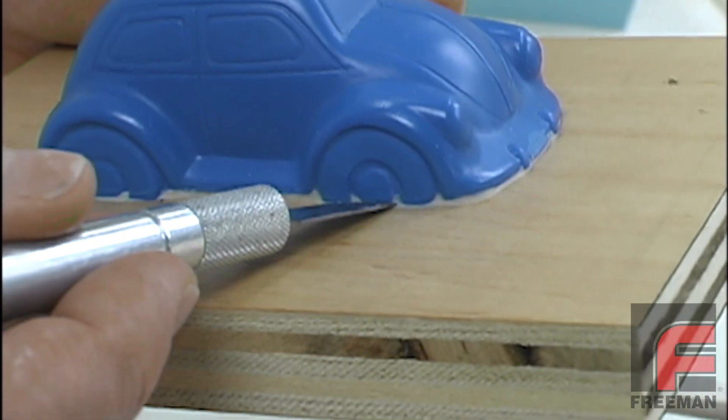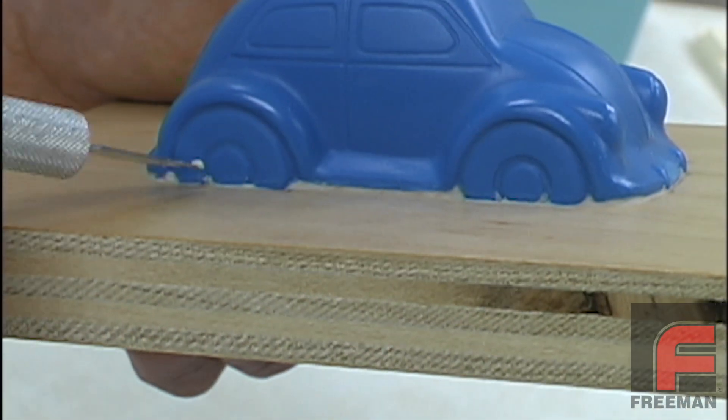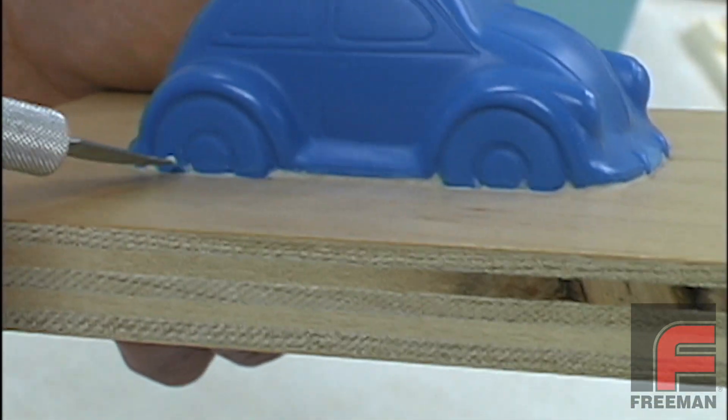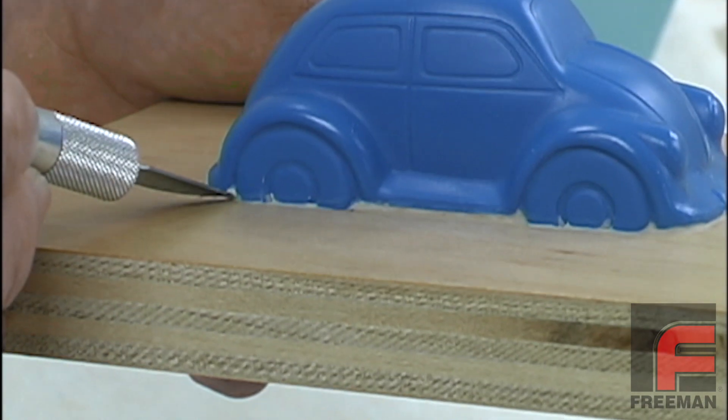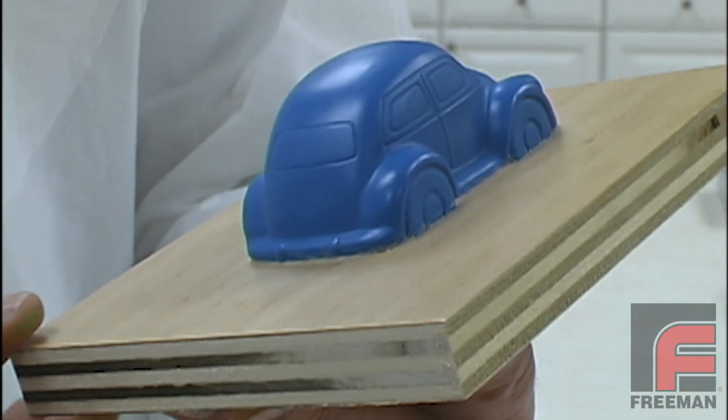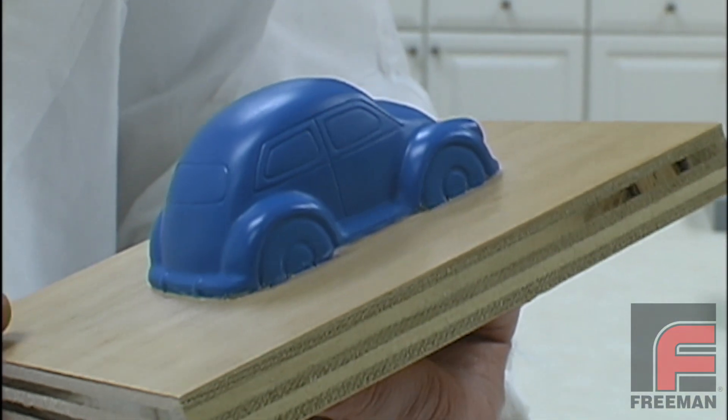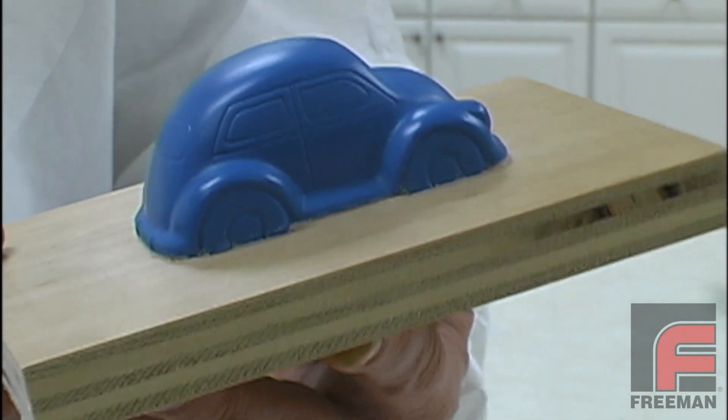Finally, using an X-Acto knife, we trim the remaining excess clay around the detail of the wheels. Here is our completed master model with the wheels set below the plywood and clayed in to create a clean parting line.